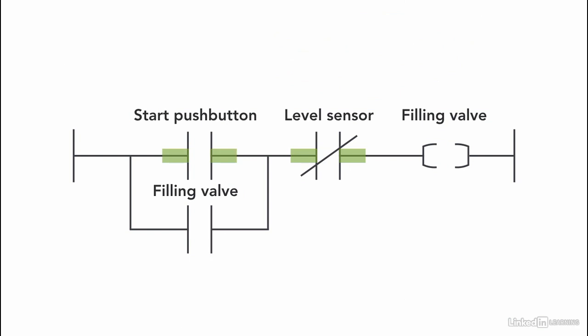Now the program works this way. Once the start pushbutton is pressed, the start pushbutton instruction is activated. And the level sensor instruction is already highlighted because it's an XIO instruction. So the valve opens and stays on. As soon as the liquid reaches the required level, the level sensor will turn on. And the XIO instruction will not be highlighted anymore, and the valve will close.